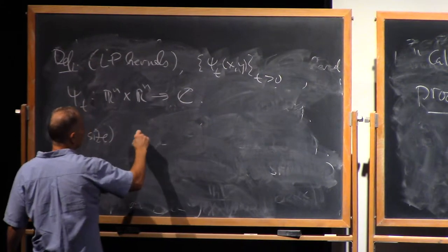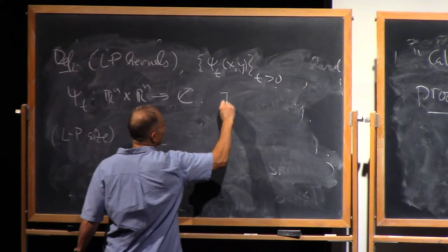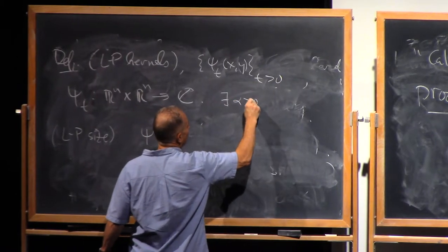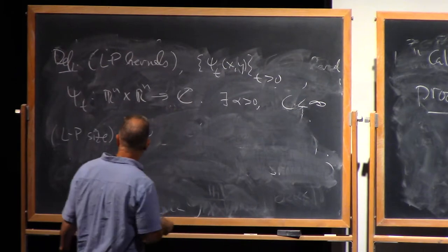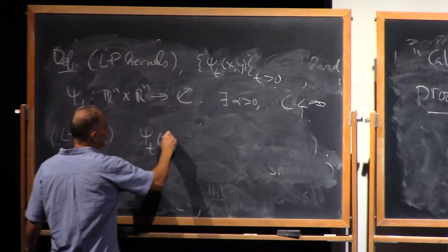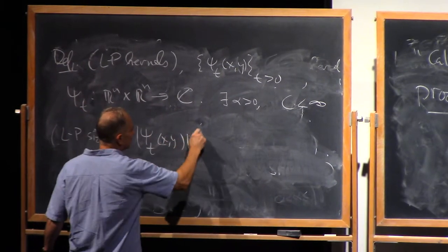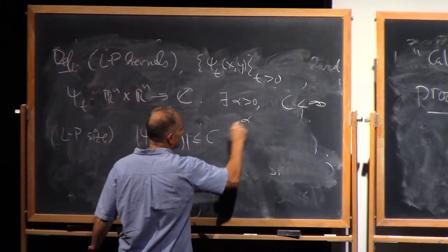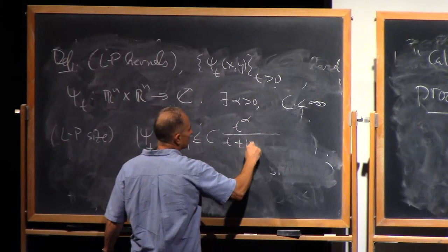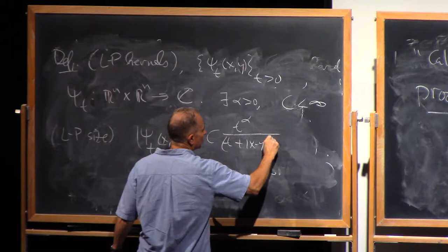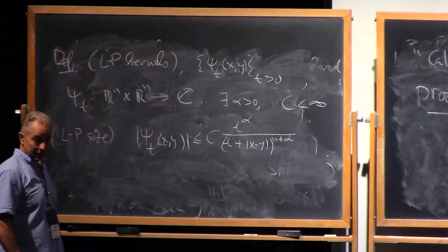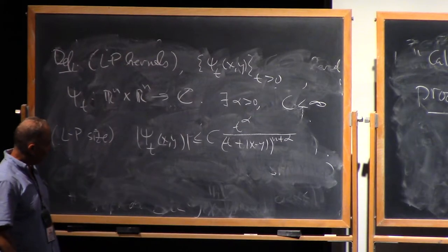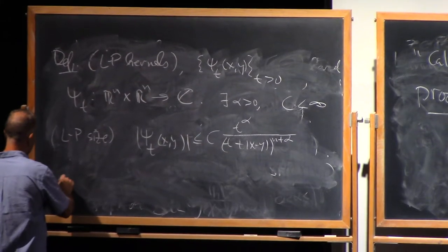So we're gonna assume that there exists some positive alpha and some finite constant c, such that we have this. The size condition is that we have this upper bound for the modulus of psi_t. And we're gonna have a smoothness condition.